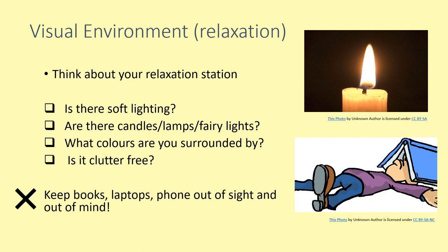Going back to your relaxation station, think about the following: how does the space become lit — is there soft lighting, lamps or fairy lights perhaps? Do you associate candles with that relaxing space? What kind of colours are you surrounded by, and does the room look busy or clear of items which may bring about stress? The general advice is to keep bright lights away and include colours you find soothing, such as green or blue. Keep books, desks and any items you associate with productivity out of sight and out of mind. The same way your phone might distract you from study, your books or laptop might distract you from real relaxation.